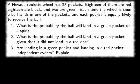A Nevada roulette wheel has 38 pockets. 18 of them are red, 18 are black, and two are green. Each time the wheel is spun, a ball lands in one of the pockets, and each pocket is equally likely to receive the ball.